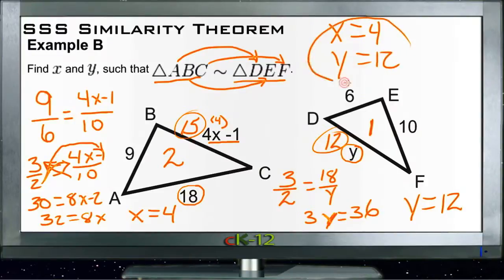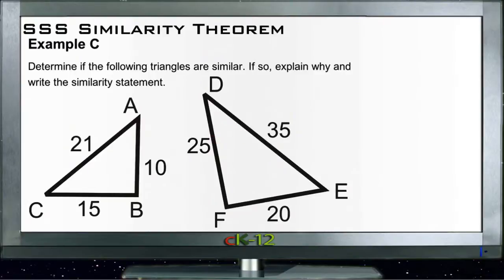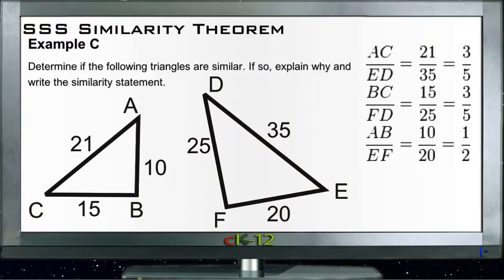Example C: This one's very similar to Example A. Determine if the following triangles are similar. If so, explain why and write the similarity statement. Again, I went and copied the comparisons. You'll see here that if we compare the corresponding sides of the two triangles and then reduce the fractions, we come up with 3 fifths and 3 fifths, which was looking good, but then by the time we compare the middle side of the triangles, we come up with 1 half, which is not the same. So these two triangles are not similar.